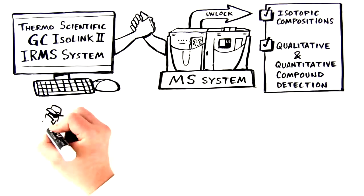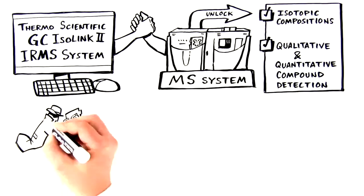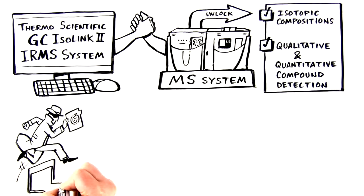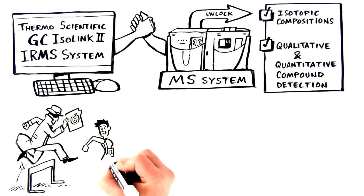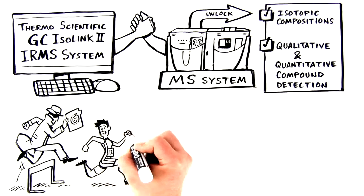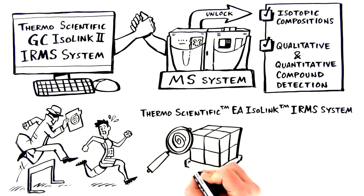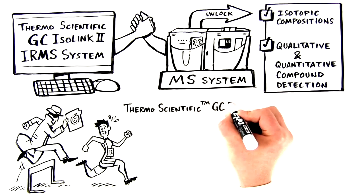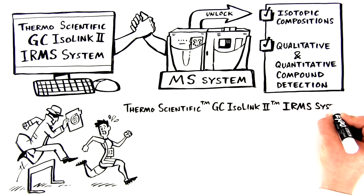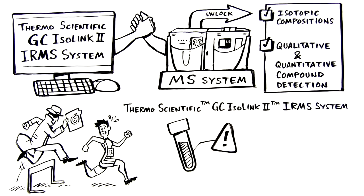The isotope fingerprinting portfolio is designed for maximum flexibility and utility in a wide range of applications. Options for your lab include the thermoscientific GC-ISOLINK-2 IRMS system for analyzing volatile compounds within a sample.